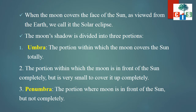The Moon's shadow is divided into three portions. The first portion is the umbra — the portion within which the Moon covers the Sun totally. The second portion is the penumbra — within which the Moon is in front of the Sun but is too small to cover it completely. The third portion is the one within which the Moon is in front of the Sun but does not cover it up completely.